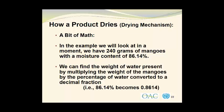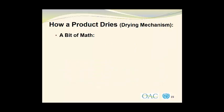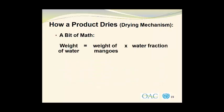We can find the weight of water present by multiplying the weight of the mangoes by the percentage of water converted to a decimal fraction. Therefore, 86.14% becomes 0.8614. The weight of water equals 240 grams times 0.8614, which gives us 206.7 grams of water present in the 240-gram sample of mango slices that we are going to dry.